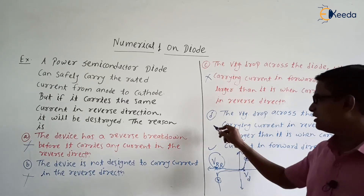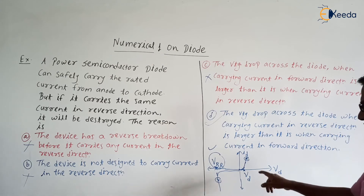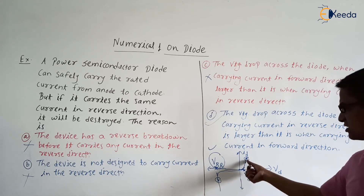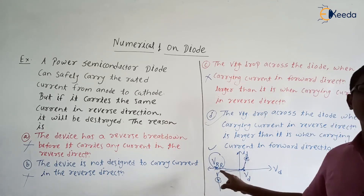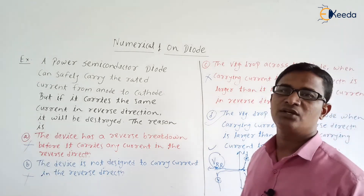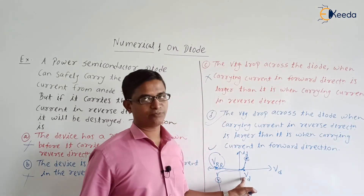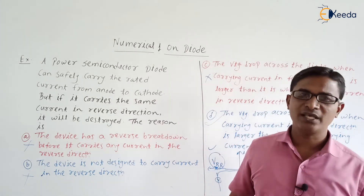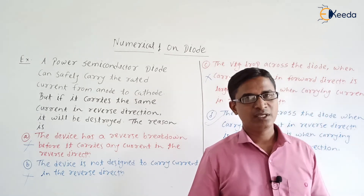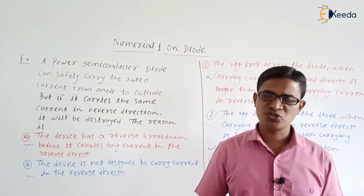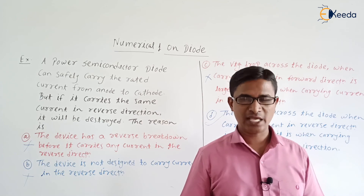So the correct answer is option D. The diode can carry the rated current in the forward bias mode without being destroyed because the power loss there is less. But the power loss in the reverse direction will be high because the reverse breakdown voltage is high compared to the forward voltage drop. In the next video, we will start the silicon controlled rectifier, the most popular member of the thyristor family. Thank you.